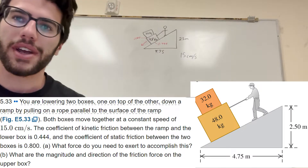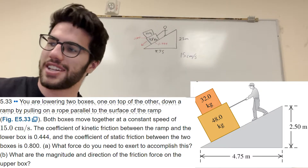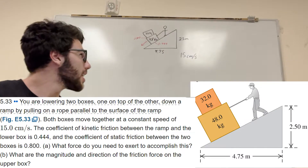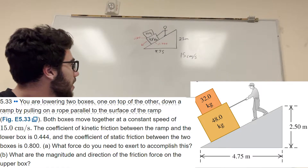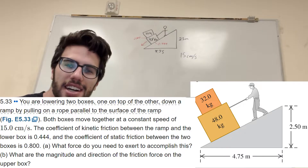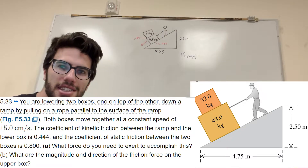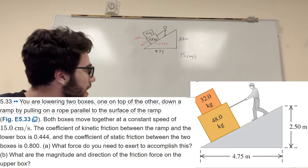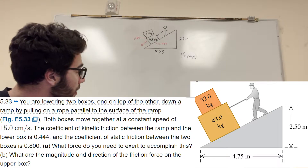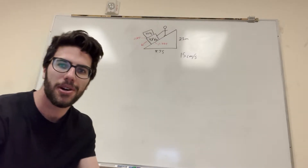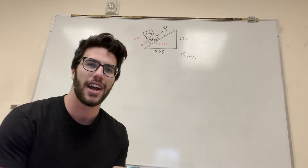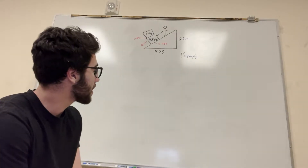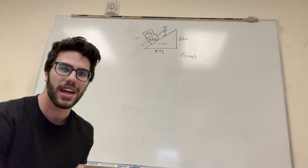What's up Calvin gang? We got a physics problem on our hands today, so let's go ahead and solve it. You are holding a rope connected to some boxes and you're lowering them down the ramp with some friction. The first part is asking how much force you're applying if you're going down the ramp at 15 centimeters per second.